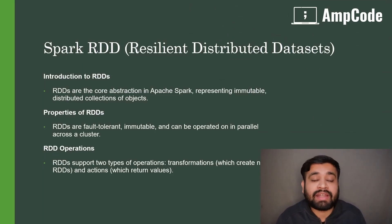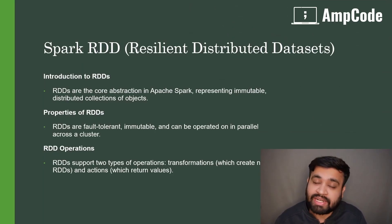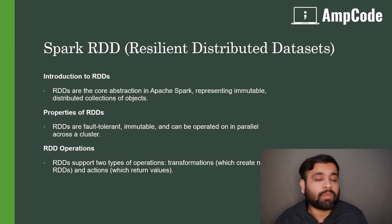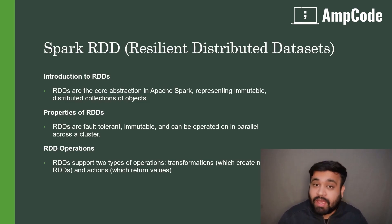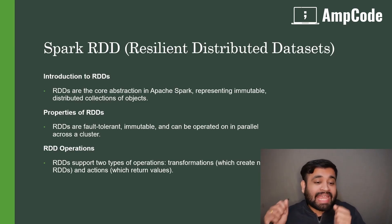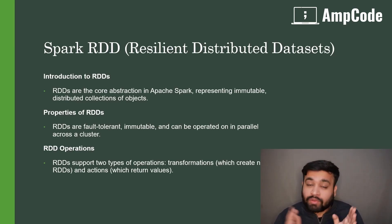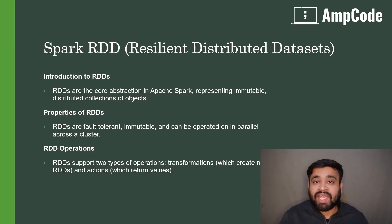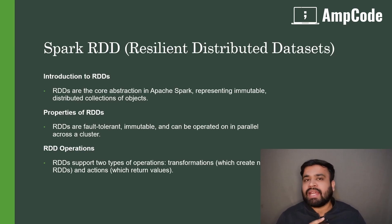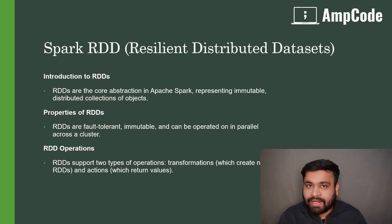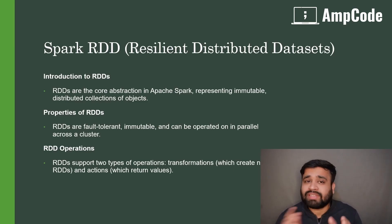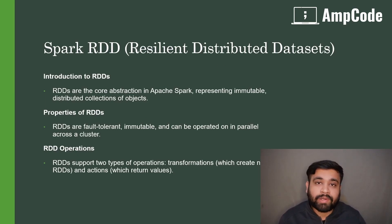Let's talk about RDD, which is Resilient Distributed Dataset — the core component of Apache Spark API. RDDs are the core abstraction in Apache Spark and represent immutable, distributed collections of objects. As the name suggests, it is immutable and distributed, which makes the RDD resilient, meaning it allows recovery from failures because it is distributed across the cluster and can be processed in a parallel manner.